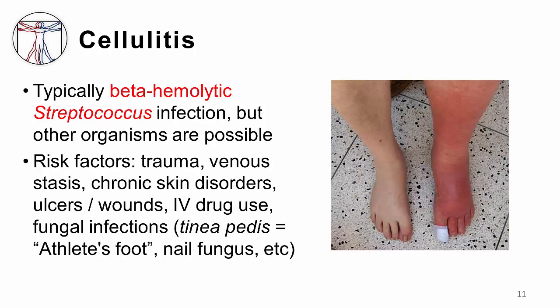Cellulitis often affects the limbs, because the limbs are susceptible to minor traumas that can allow a portal of entry for skin bacteria. Bacteria can also be introduced via injection drug use. Additionally, several conditions can predispose patients to cellulitis, including chronic venous stasis, pressure ulcers, diabetic foot ulcers, and fungal infections, which frequently occur on the limbs, further increasing the risk of developing cellulitis there.